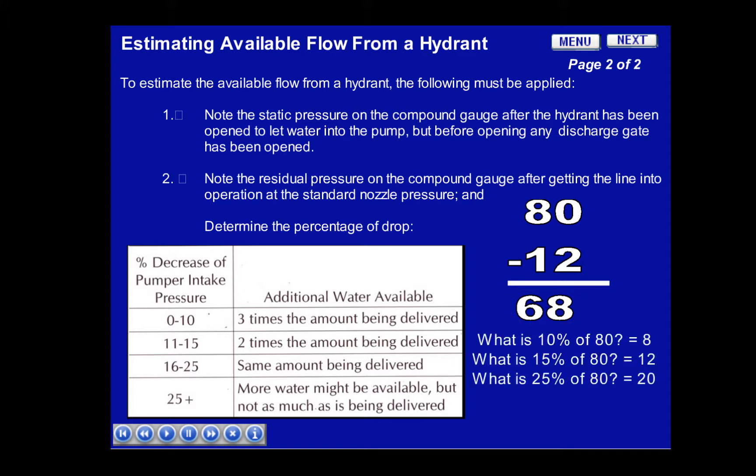The simple way to determine the percentage loss of your static pressure is to begin by asking yourself: what is 10% of 80? In this case, that equals 8. Then simply take your answer and add half of 8, which is 4, and that will tell us what 15% is. In the case of 80, 15% is 12. Then, to determine what the 25% loss is, you simply add 8 and 12 together, which equals 20. In the case of our sample of 80 PSI, we had a loss of 15%, which was 12 PSI. Based on the 15% loss, we would be able to supply two times the amount of water being delivered.